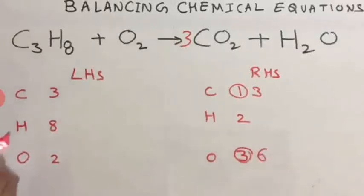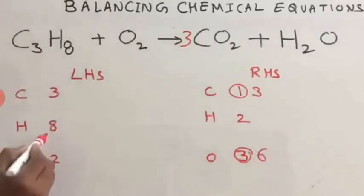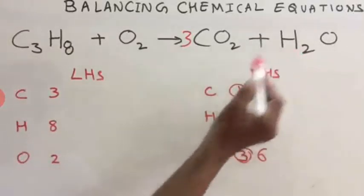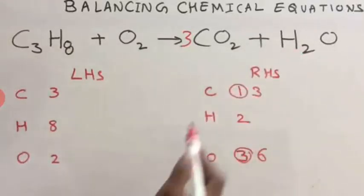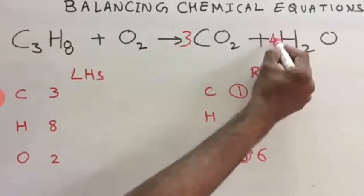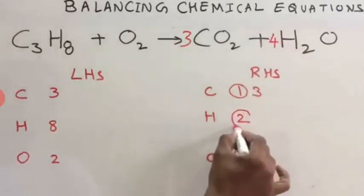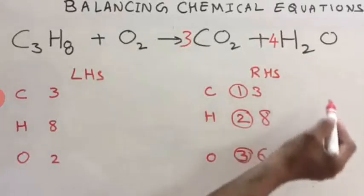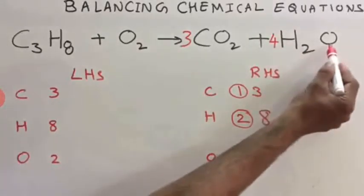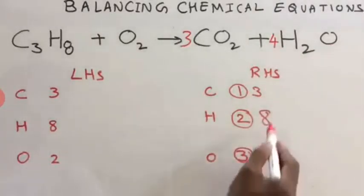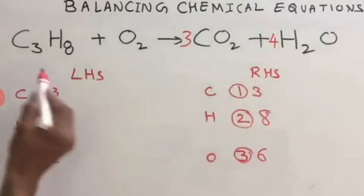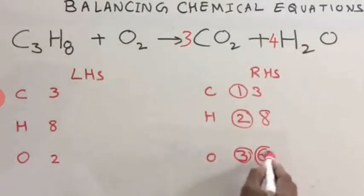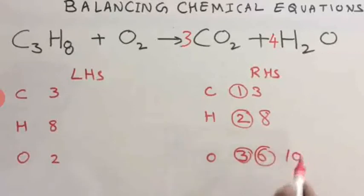Now check for hydrogen. On LHS you have 8 hydrogen, on RHS you have only 2 hydrogen. How to make these 2 hydrogen into 8? Multiply this with 4 — 4 twos are 8. That means the new hydrogen is 8 now. But at the same time, the number of oxygen changed to 4. That means already you have 6 here and then 4, total 10.